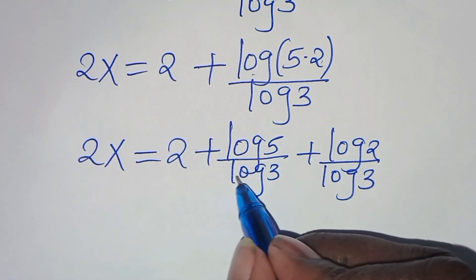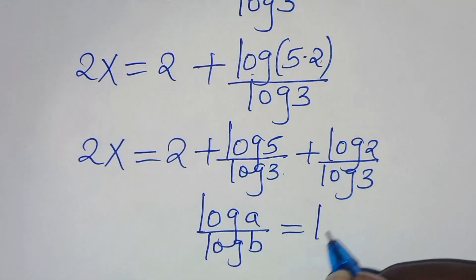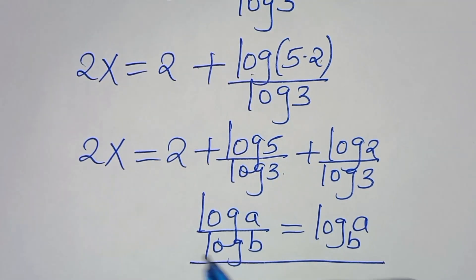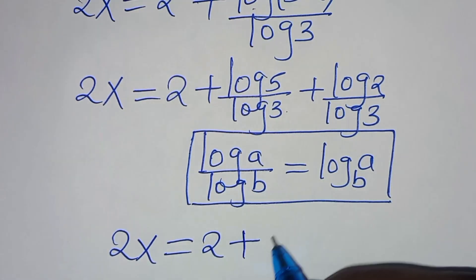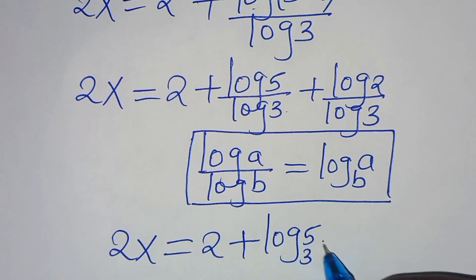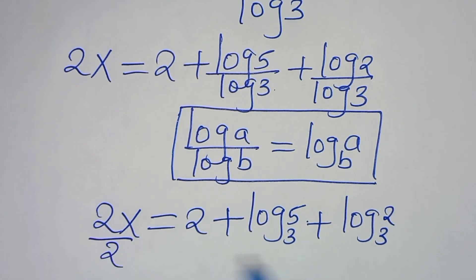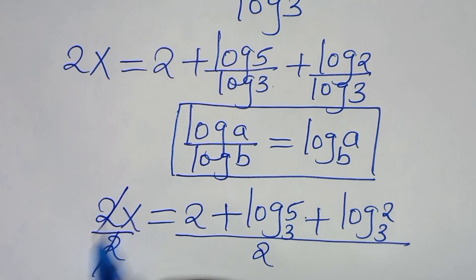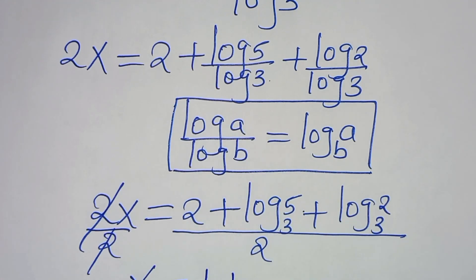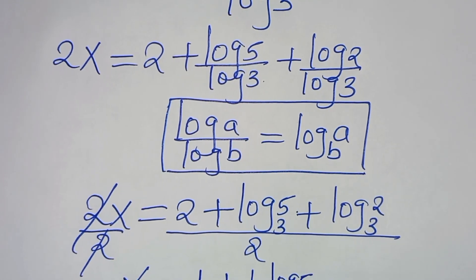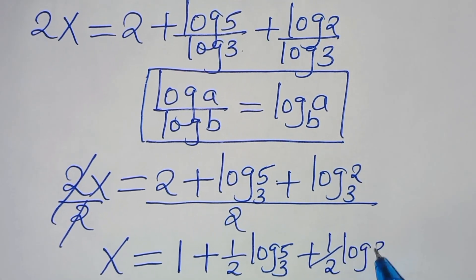We have that log 5 over log 3 and log 2 over log 3 are in the form of log a over log b, which we can express as log base b of a. Applying this logarithm property, we have 2x equal to 2 plus log base 3 of 5, then plus log base 3 of 2. The next step is to divide both sides by 2, so that x is equal to 2 divided by 2 which is 1, then plus one half log base 3 of 5.